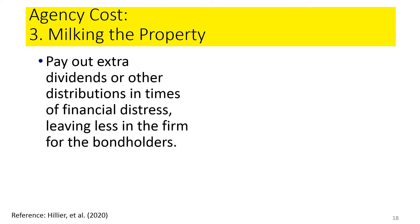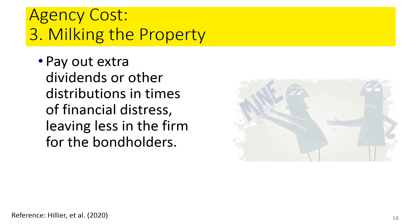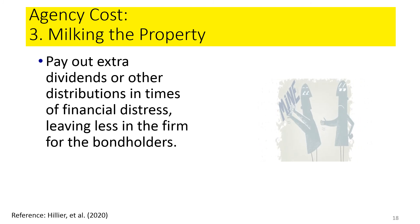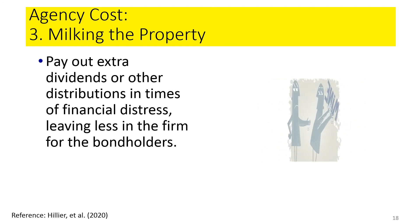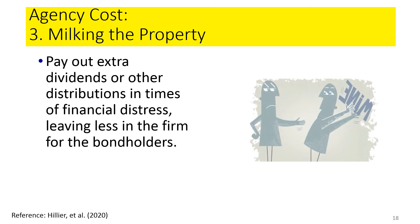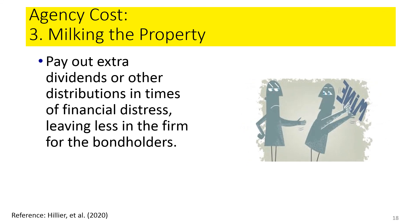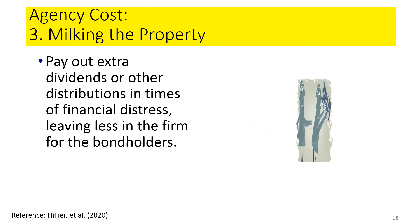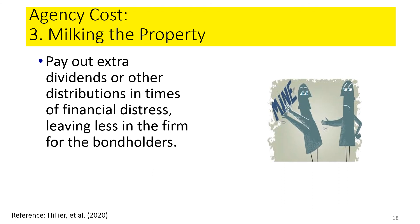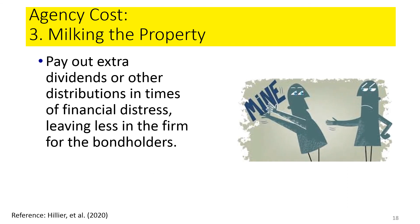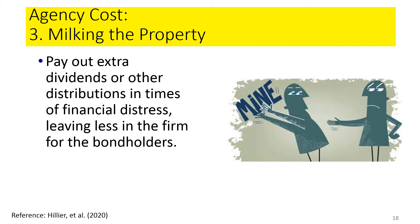The third selfish investment strategy is known as milking the property — a phrase taken from real estate. In such a case, shareholders pay out extra dividends or other distributions in times of financial distress, leaving less in the firm for the bondholders. This is worse than underinvestment: in the underinvestment strategy the firm chooses not to raise new equity, but strategy three goes one step further because equity is actually withdrawn through the dividend.